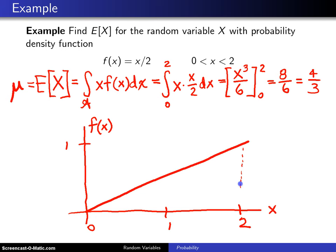In this particular case, you can do the one half base times height to see that the area underneath this is 1. But as we calculate an expected value and wind up with 4 thirds, 4 thirds is right here.